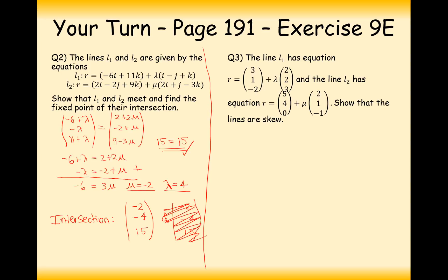For question three, we need to show the lines are skew. Start by checking they're not parallel — direction vectors 2, 2, 3 and 2, 1, minus 1 are not scalar multiples of each other, so not parallel. Create the vector equations and combine into one vector, which makes writing the simultaneous equations easier. The x component gives one equation, the y component gives: 1 plus 2 lambda equals 4 plus mu.